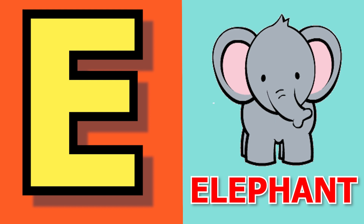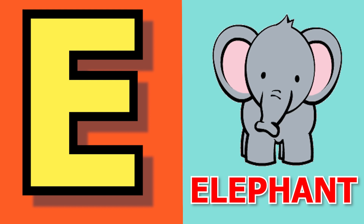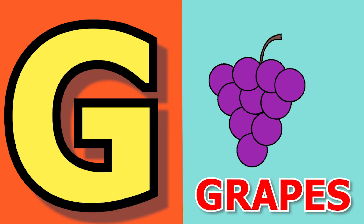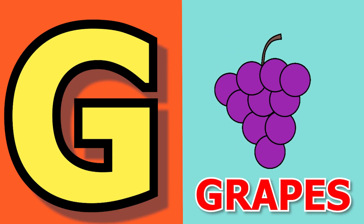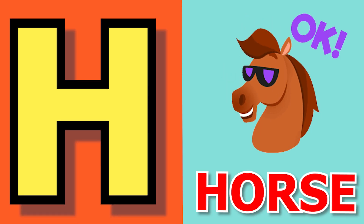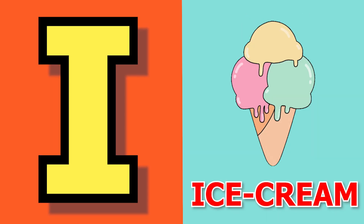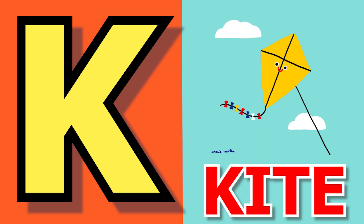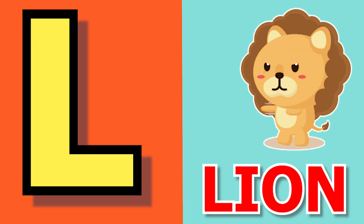E for elephant, F for fish, G for grapes, H for house, I for ice cream, J for jug, K for kite, L for lion.